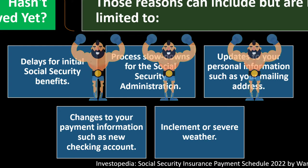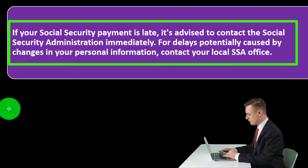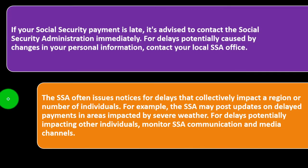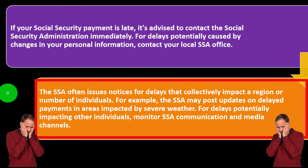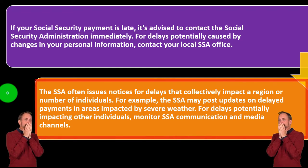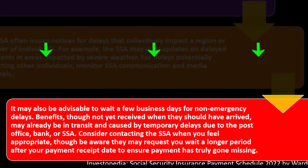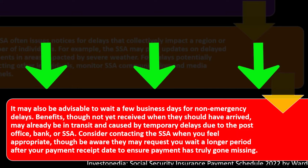If your Social Security payment hasn't arrived, it may be late for various reasons including delays for initial benefits processing, updates to your personal information such as mailing address, changes to payment information such as a new account, or severe weather. If your payment is late, contact the Social Security Administration immediately. The SSA often issues notices for delays impacting a region. It may also be advisable to wait a few business days for non-emergency delays, as benefits may already be in transit.